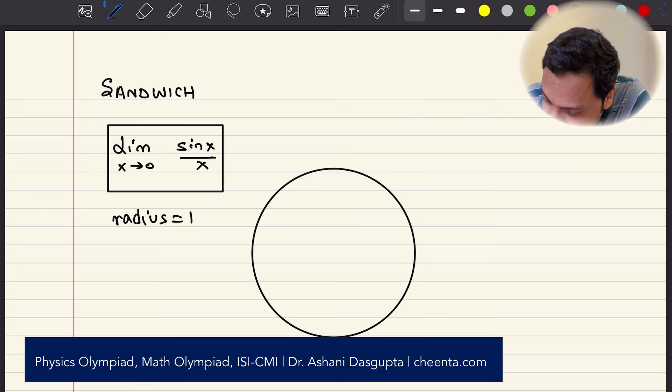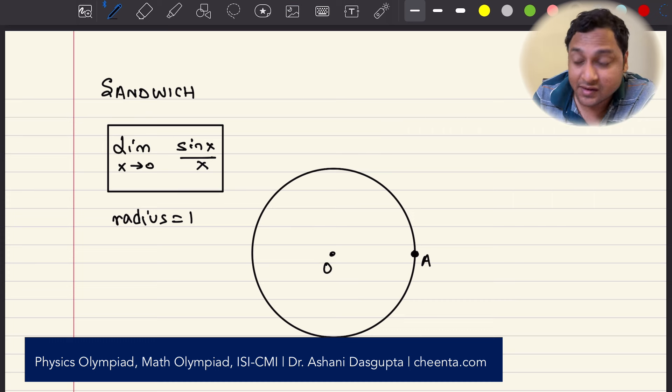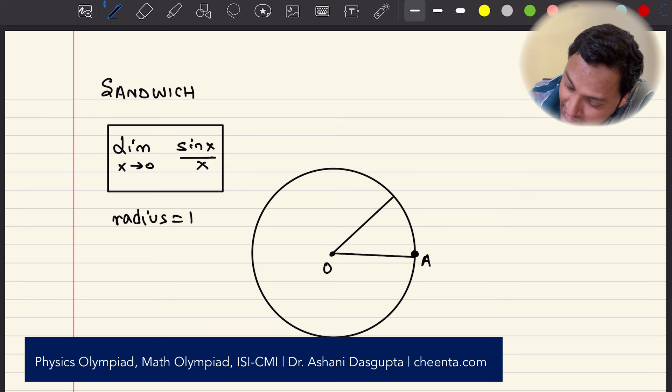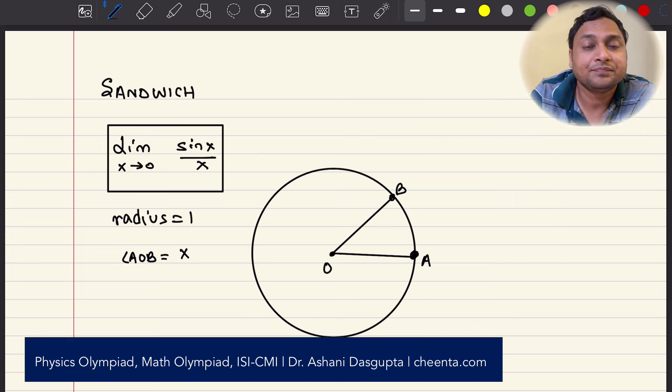Let's mark the center of the circle, mark the point on the circumference, let's say A. And let's suppose AOB is the angle x. Angle AOB is equal to x. This is usually in radians.